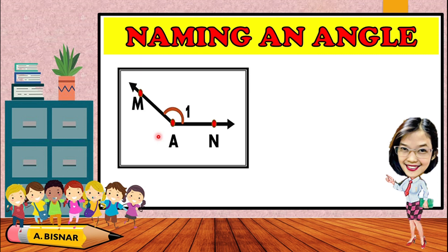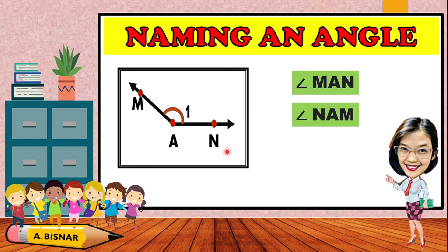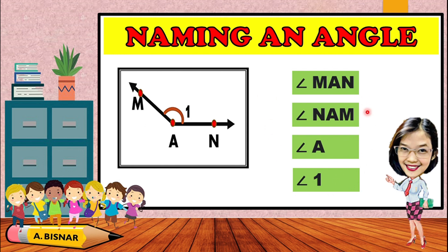Let's try this one — what are the possible names for this angle? That's correct, it can be named as angle MAN. It can also be named as angle NAM. It can also be called angle A, or angle 1. As you can see, we have four different ways to name an angle.